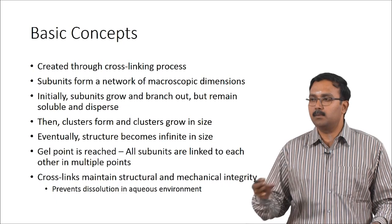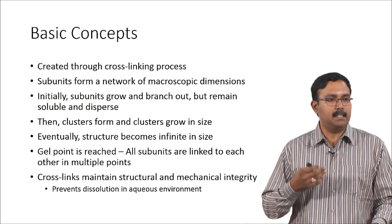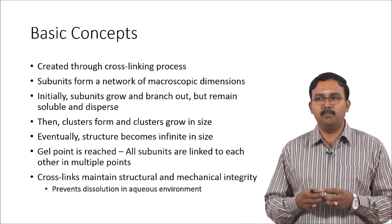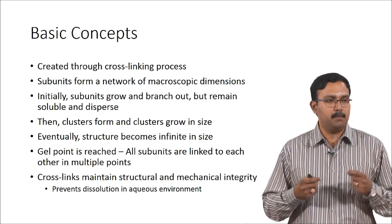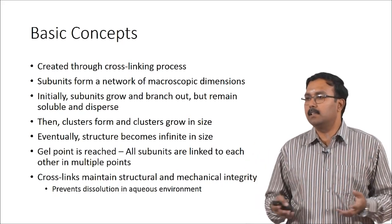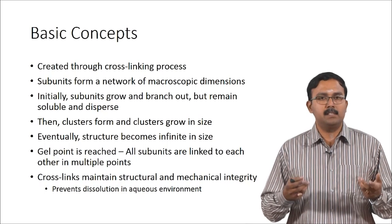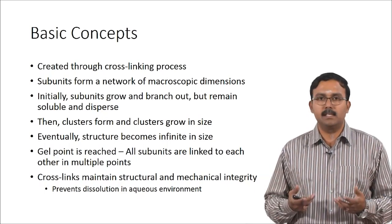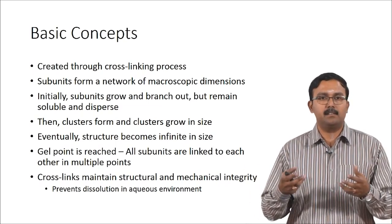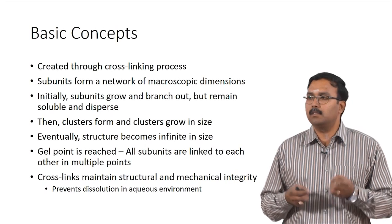For solute transport, a hydrogel would be a good material where you would have very rapid solute transport, which helps the cells that are seeded. Hydrogels are created through a crosslinking procedure — the subunits form a network of macroscopic dimensions. Initially the subunits start growing and branch out but remain soluble and dispersed in the solution. But as the number of crosslinks increases, clusters are formed and these clusters grow in size. Eventually these clusters become infinite in size and form something like a gel — at this point gelation happens, which is called the gelling point.